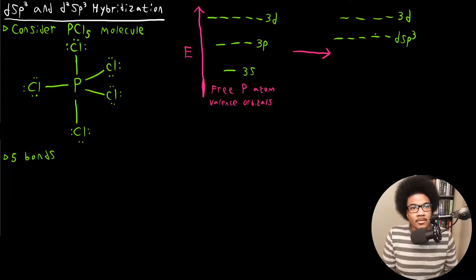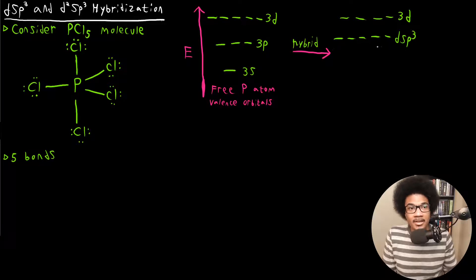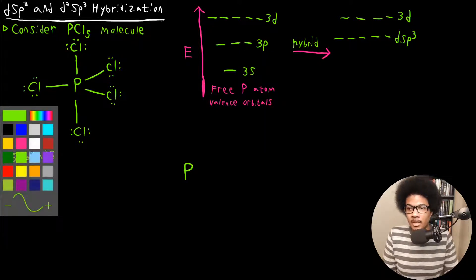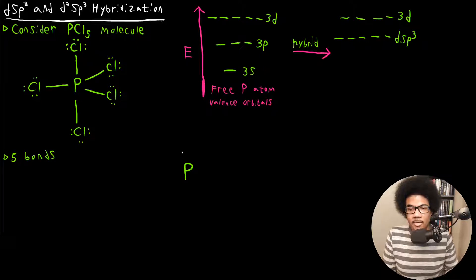So you're going to have the hybridization occur, and you're going to have five identical DSP3 orbitals. So what is that going to look like? So we've got phosphorus in the center here, and we got our different hybrid orbitals.